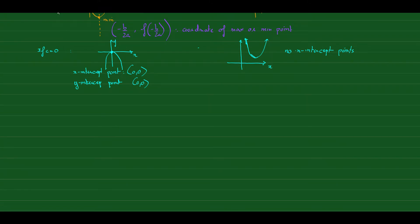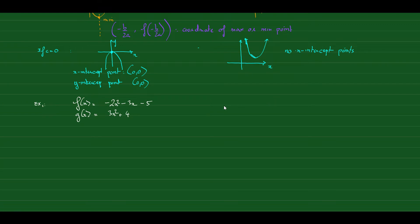For example, f(x) = −2x² + 3x − 5 is a quadratic function with all three terms. Also, f(x) = 3x² + 4 is a quadratic function, and f(x) = −3x² + x is also a quadratic function. As long as the second degree is the highest degree in the function, it is called a quadratic function.